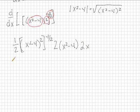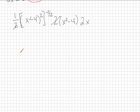So let's make sense out of all of this. This 1 half and the 2 are going to cancel each other out. And I'm going to change this back into root form. So we will have a denominator of square root of x squared minus 4 squared.